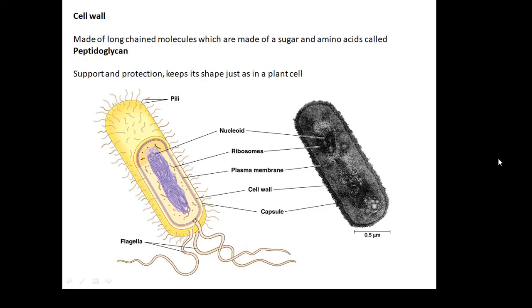The cell wall is made of long-chained molecules made of sugars and amino acids, called peptidoglycan. The cell wall supports and protects the cell and keeps its shape, just as it does in a plant cell.